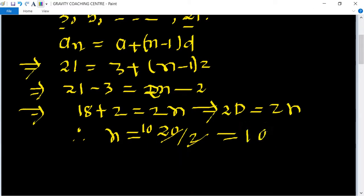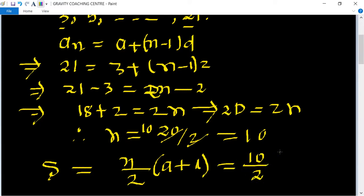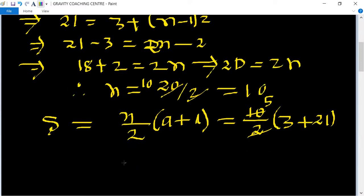Now using the formula Sₙ = (n/2)(a + l), where n = 10, first term a = 3, and last term = 21, we get S = (10/2)(3 + 21) = 5 × 24